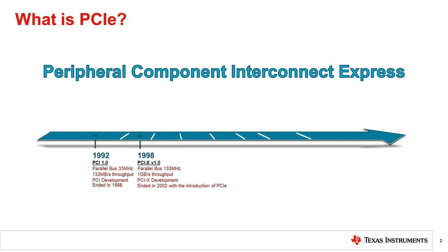At the time of its introduction in 2003, the PCIe serial bus standard was meant to replace these older parallel buses to enable a higher data rate and to simplify system design.